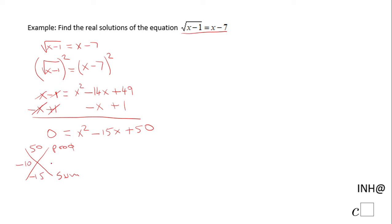That will be negative 10 and negative 5, so the factor form of our problem will be x minus 10 times x minus 5 equals 0.